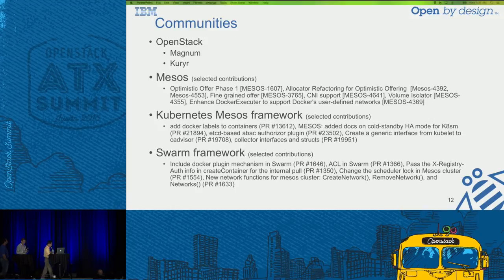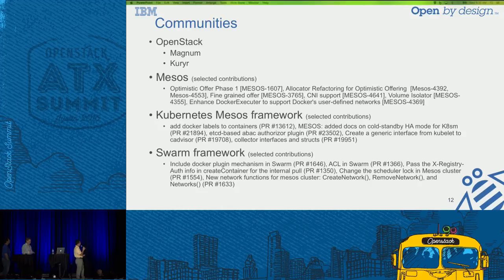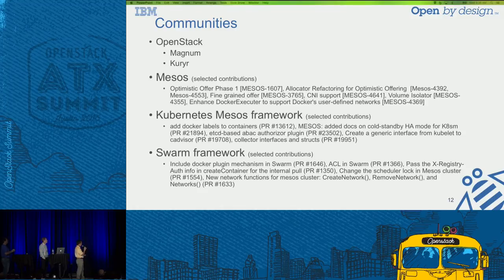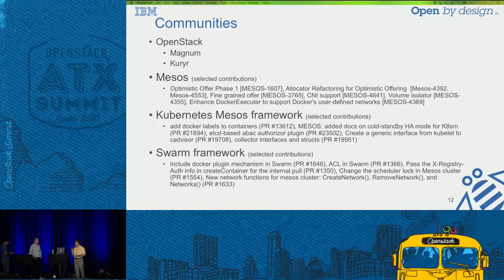To wrap up, these are the communities we work with: Magnum, where we're very productive; Kuryr, to handle networking and upcoming storage support; and Mesos, where we've made contributions including the Mesos-Kubernetes framework and the Swarm framework. These are the communities we work with to build this kind of environment.